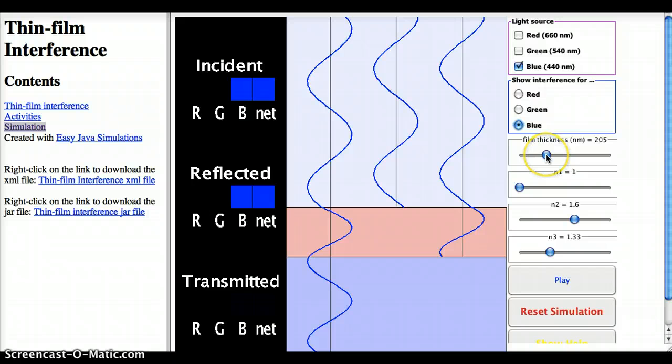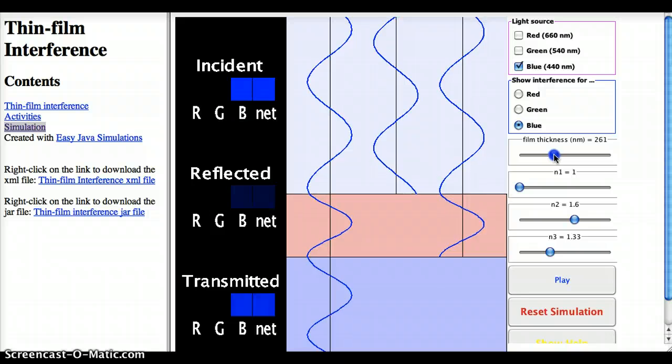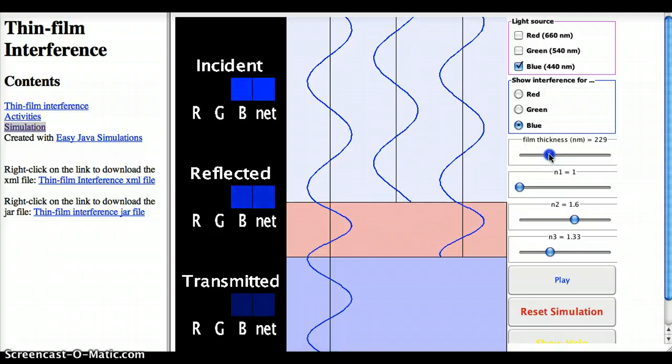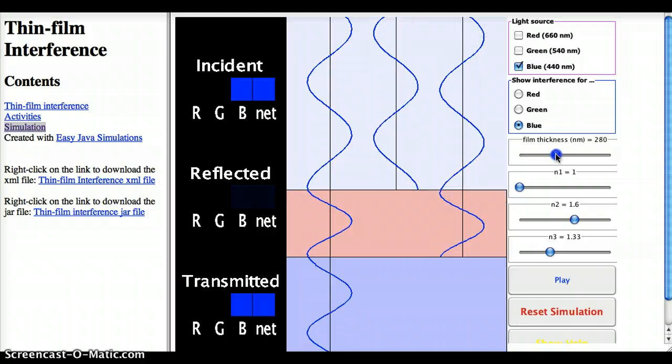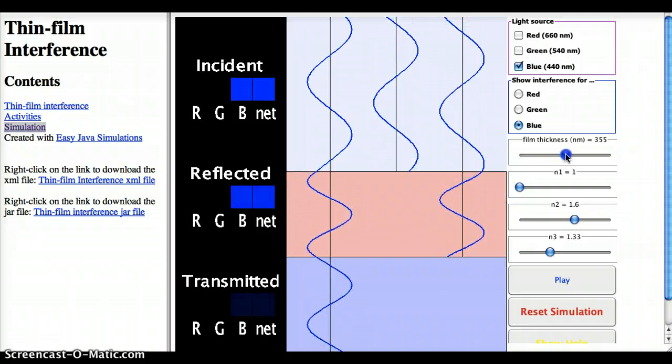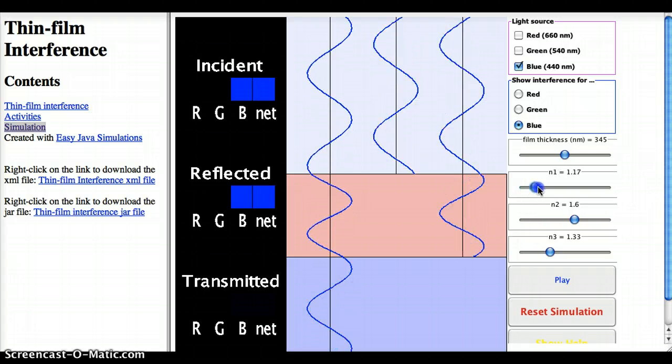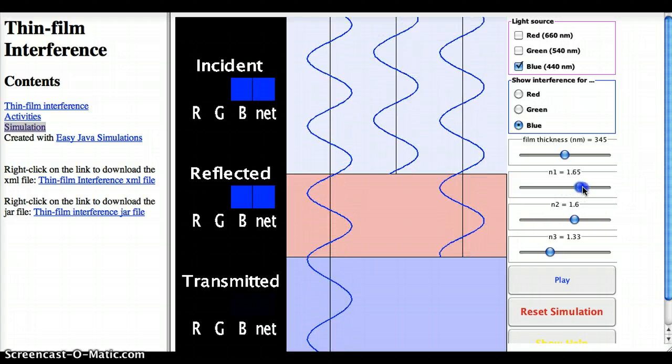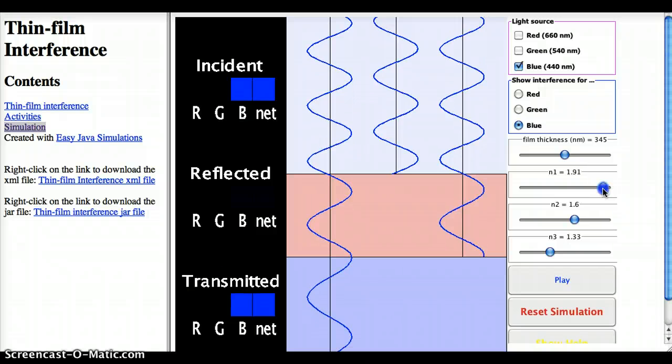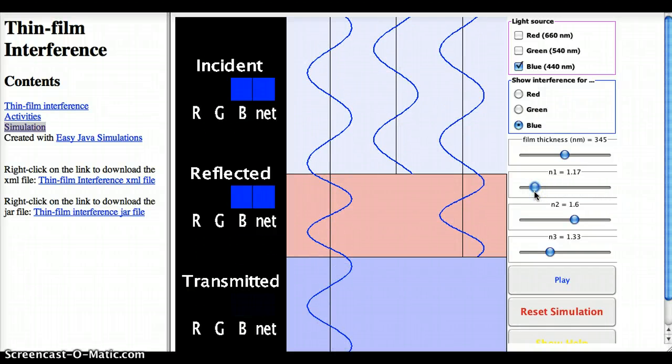I can also change the thickness of the thin film. So if I drag this around, we can go from lots of reflected light to no reflected light to lots of reflected light. As we move through different numbers of wavelengths that fit in this middle medium, I can change any of the indices of refraction. And so changing whether I get phase shifts or not, I can change each index of refraction.